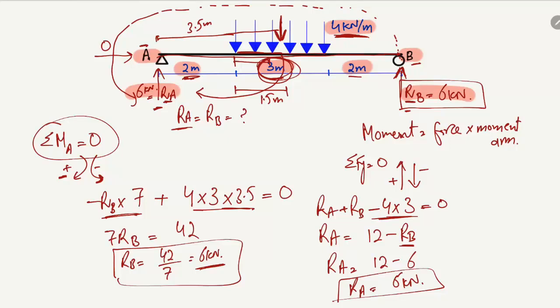This is how to find the support reactions using equilibrium equations: summation of moments at point A equal to zero, summation of moments at point B equal to zero, and summation of vertical forces equal to zero. I hope you understood. Don't forget to subscribe to our channel for daily 7 Engineering videos. Thank you for watching.